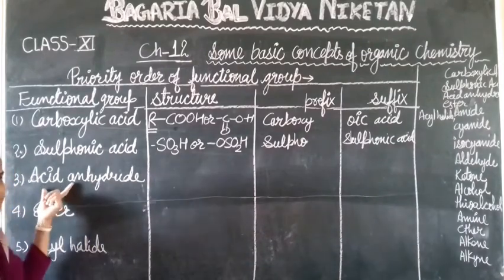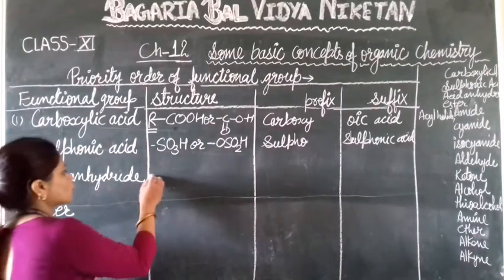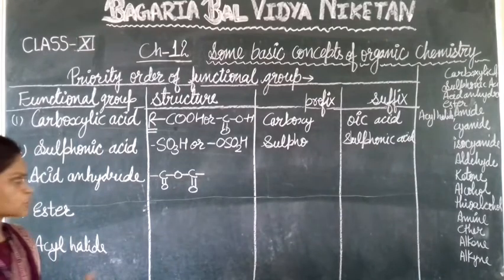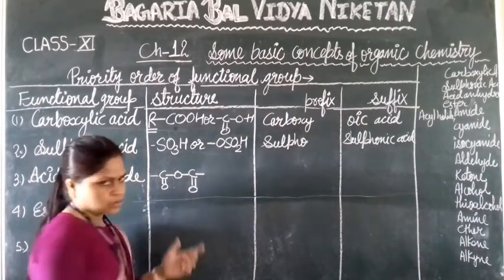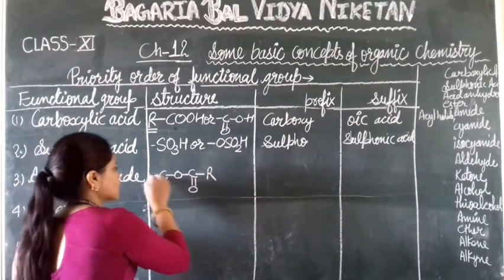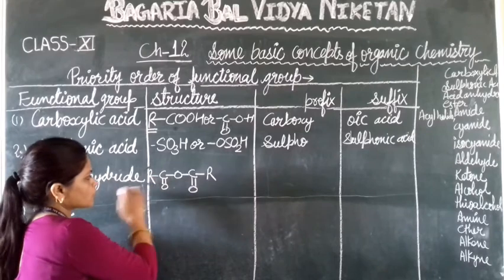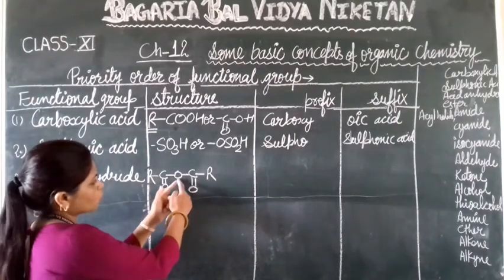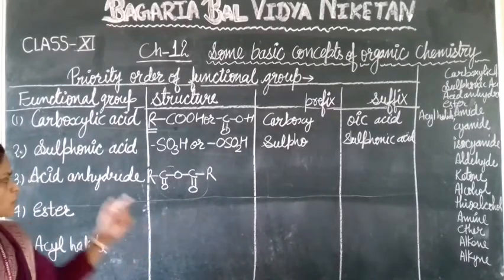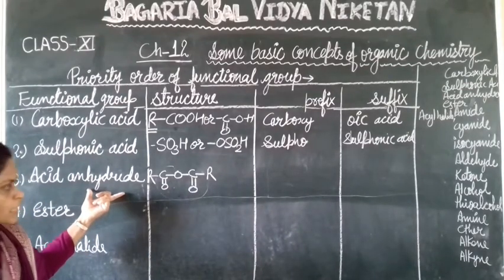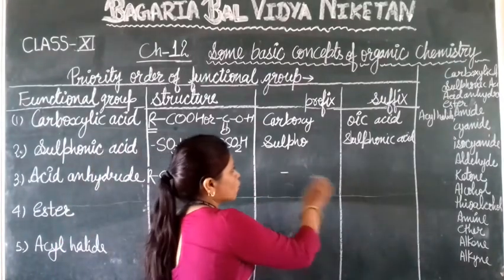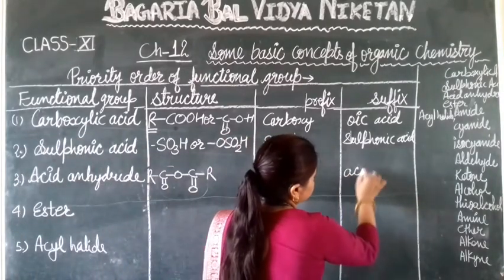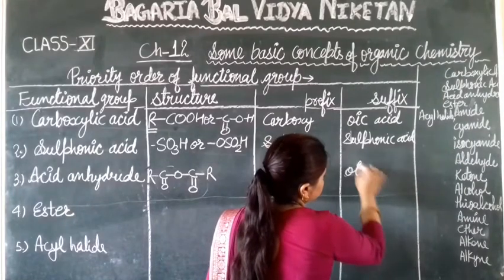Next we will talk about acid anhydride. Acid anhydride can be written with both sides having the same or different alkyl groups — represented as R-CO-O-CO-R — giving us the COOCO format. The suffix for acid anhydride is 'oic anhydride'.